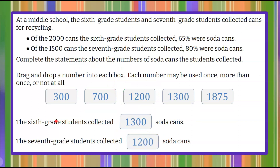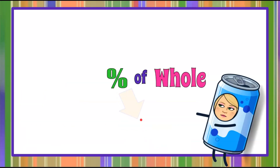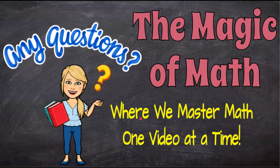Let's put this all together. Here's our final answer: the 6th grade students collected 1,300 soda cans, and the 7th grade students collected 1,200 soda cans. And that is how you find percent of whole, or part of a whole. Magic of Math, where we continue to master math one video at a time. Thanks for joining me today, and I hope you come back soon.